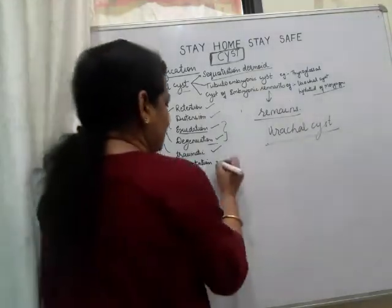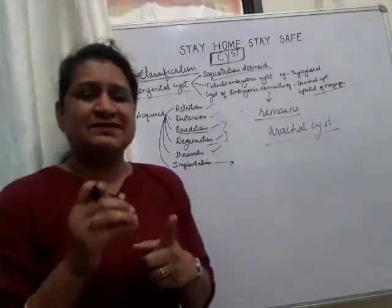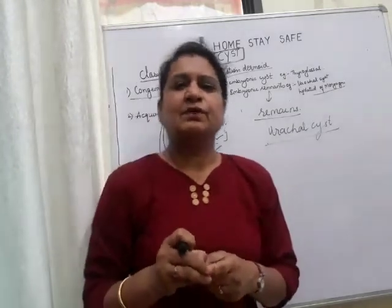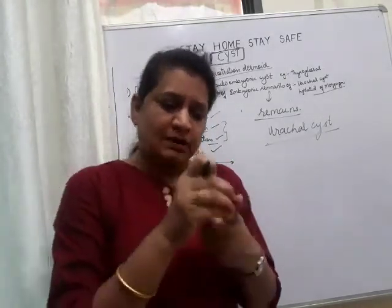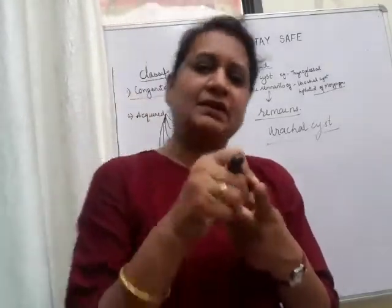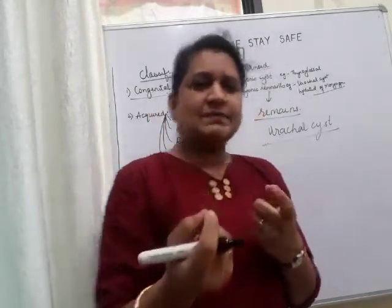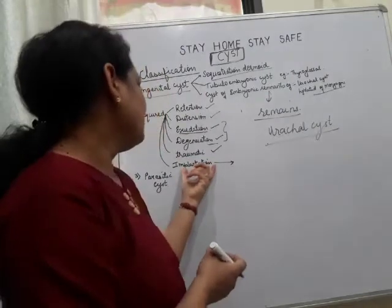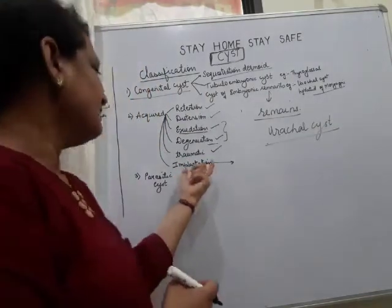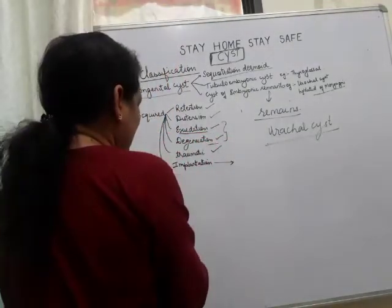Next is the implantation cyst, which occurs because of implantation of cells into deeper tissues. For example, gardeners or tailors frequently get pricks on their fingers. The epithelial cells get buried inside the deeper tissue, and a cyst forms there. That is an implantation cyst, commonly occurring in gardeners and tailors.